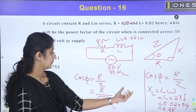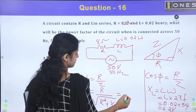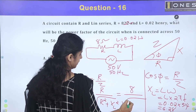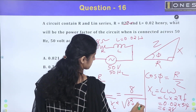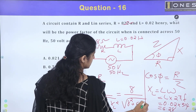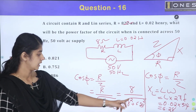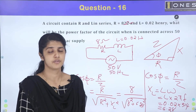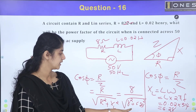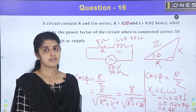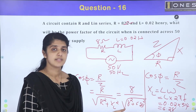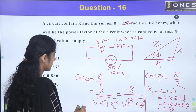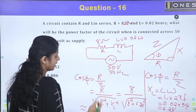Substituting into the equation: Z equals the square root of 8 squared plus 6.28 squared. Approximating 6.28 as 6, we get 8 squared is 64, 6 squared is 36, the sum is 100, and the square root of 100 is 10. So power factor is 8 divided by 10, which is approximately 0.8.